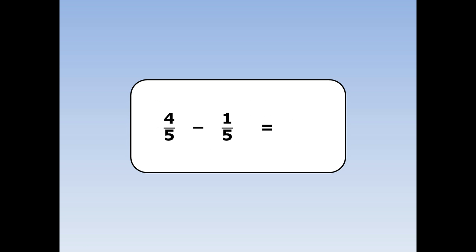4 fifths take away 1 fifth. We take away the numbers on the top and the number on the bottom stays the same. 4 take away 1 is 3, and the 5 stays the same.